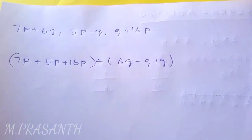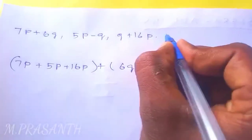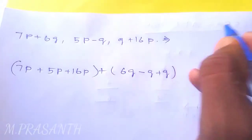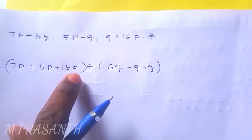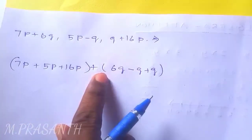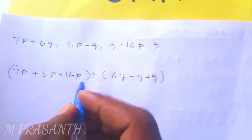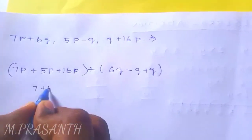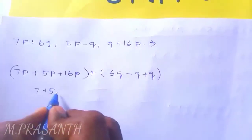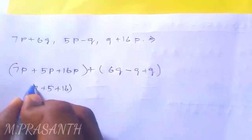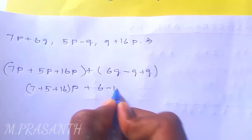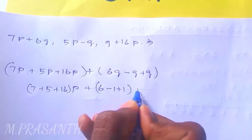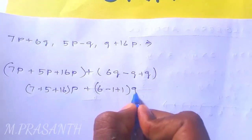Separate the like terms and add them. 7p plus 5p plus 16p - here the common variable is p. And separate the other variable q, so write 6q minus q plus q, where q is the common variable.